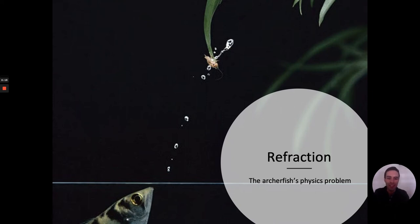Hello! This video is about the archerfish and the physics problem that it has to solve. As you can see in this picture, the fish spits water at its target and knocks it down and then eats it. What physics problem does the archerfish have to solve?